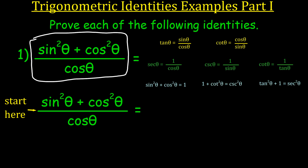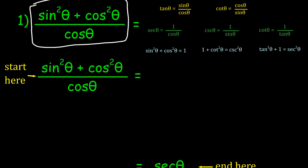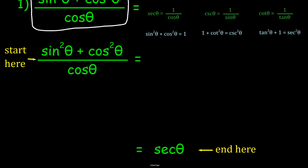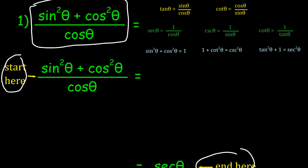Whenever you're doing these types of problems, I always start by writing down one of the sides and then do some steps to eventually end up with the answer. So between the start and the end, we're going to be doing steps until we reach secant theta. I want to look at the original problem and ask: is there anything I can change using these trig identities?